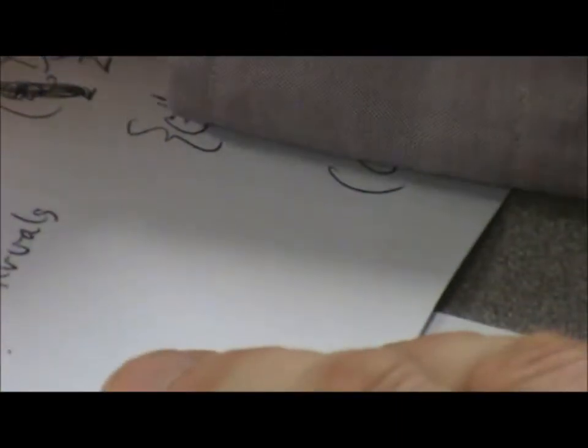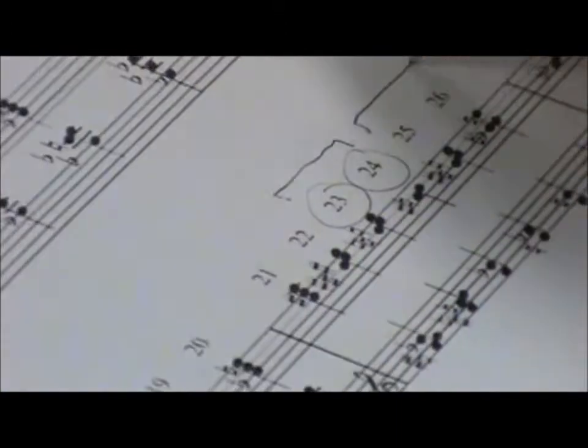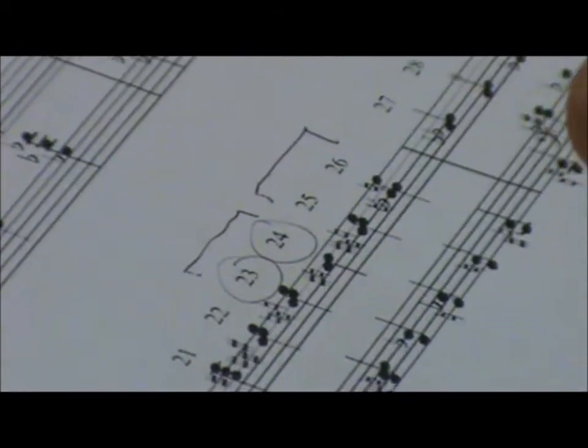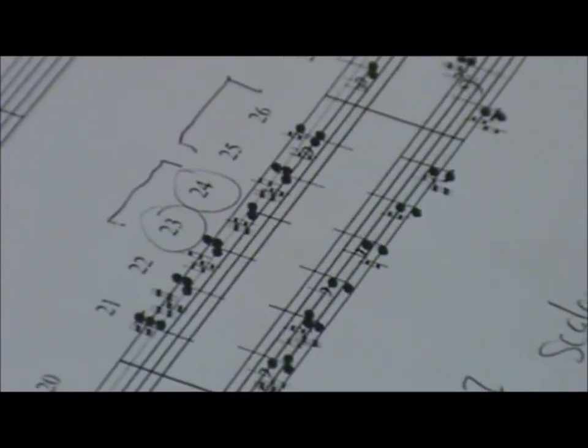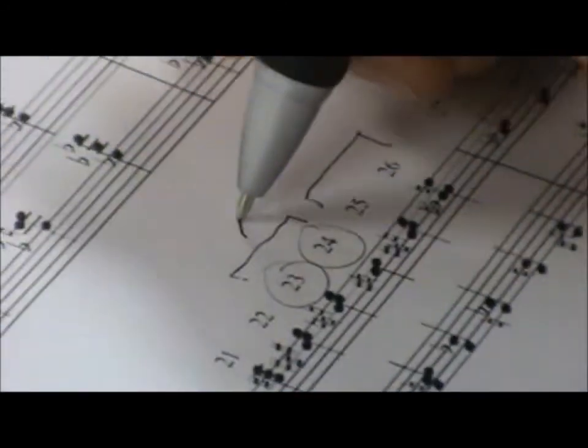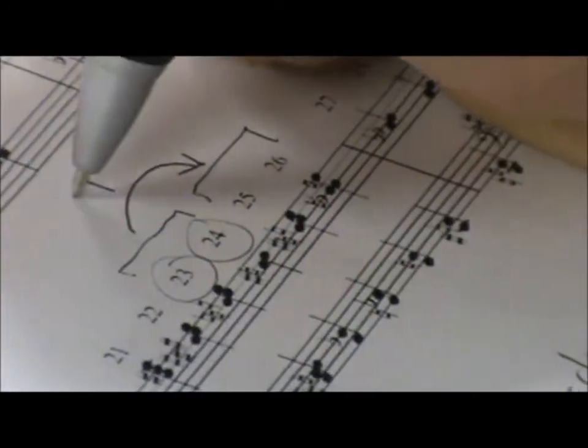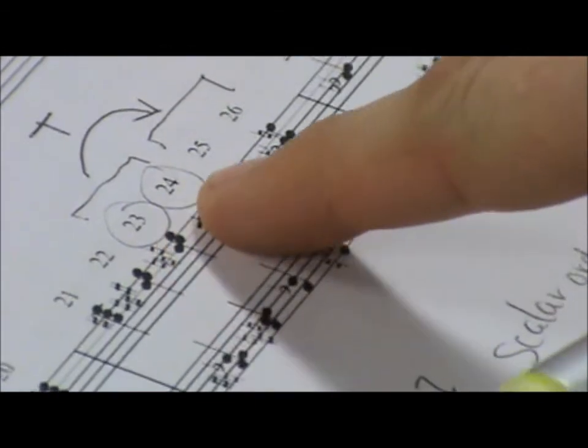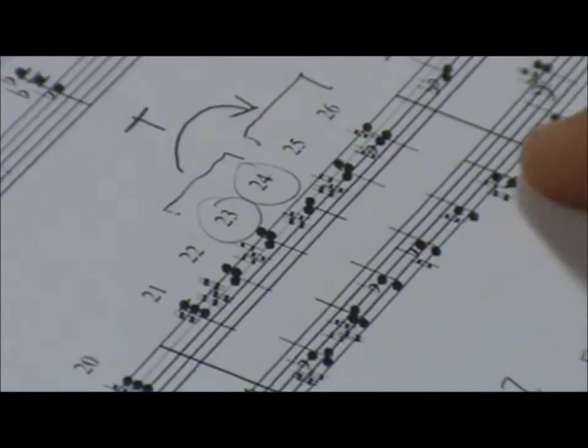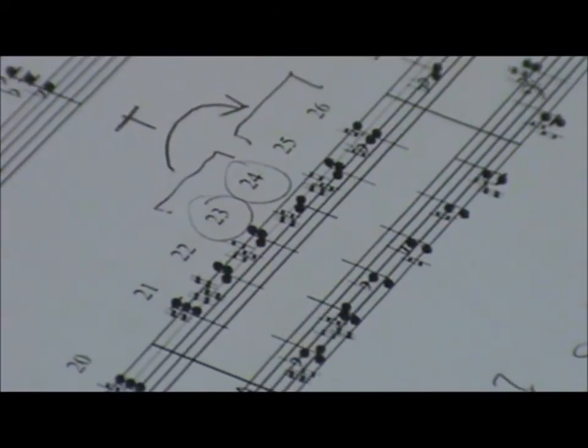Notice that these two chords come back again here at a new pitch level, but the set types return. Can you see the relationship? If I wanted to transpose chords 23 and 24 down to get 25 and 26, how far down do I have to go?